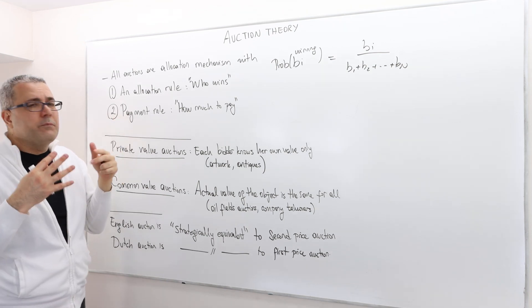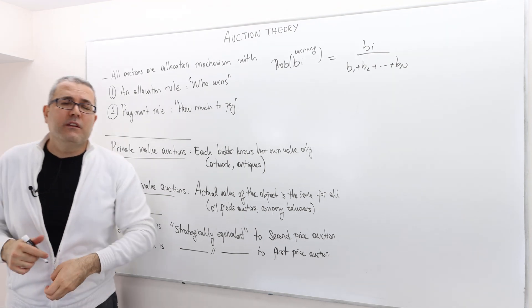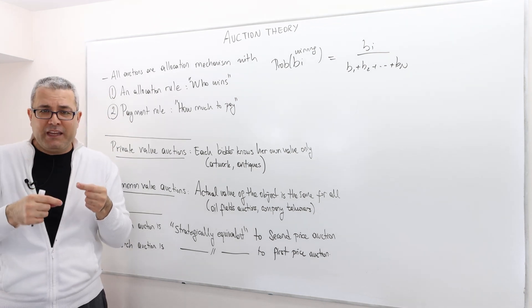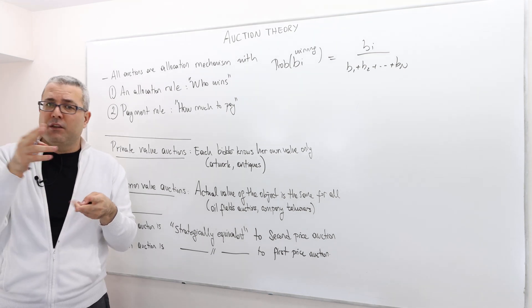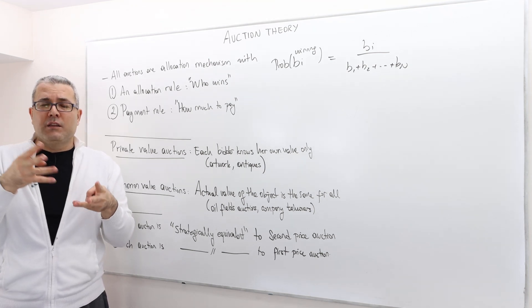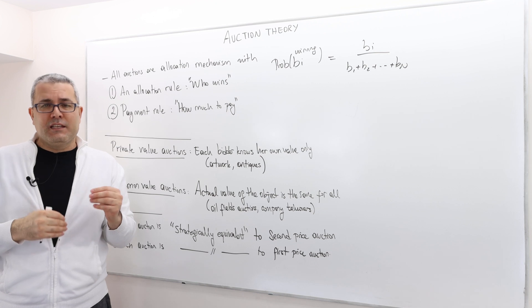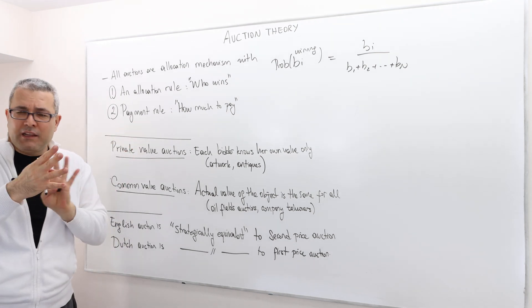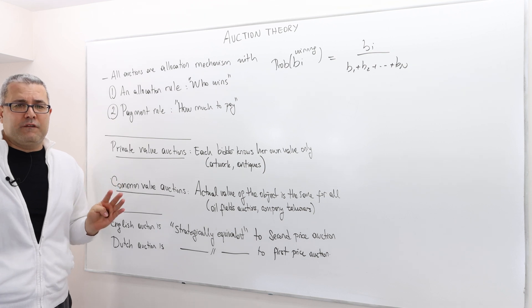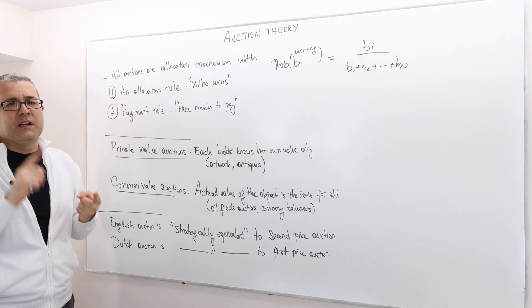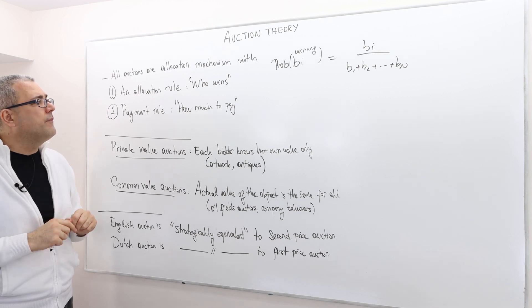Well, the second rule is the payment rule. So who needs to make a payment and how much? If you remember, in the first price auction, the winner pays his bid or the highest bid. In the second price auction, the winner pays the second highest bid. In the third price auction, the winner pays only the third highest bid. In the all pay auction, for example, all the bidders pay his or her own bid. So the different auction mechanisms have different payment rules. But nevertheless, whenever you think of an auction, you have to be clear about two things. Allocation rule, who gets the object? And payment rule, who pays how much?